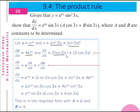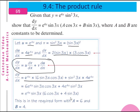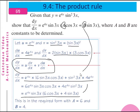And dv/dx equals 2·sin(3x) multiplied by 3·cos(3x). We substitute u, du/dx, v, and dv/dx into the product rule. After calculation, dy/dx equals e^(4x)·sin(3x) multiplied by 6·cos(3x) plus 4·sin(3x). So a equals 6 and b equals 4. This is the required form with a equal to 6 and b equal to 4.